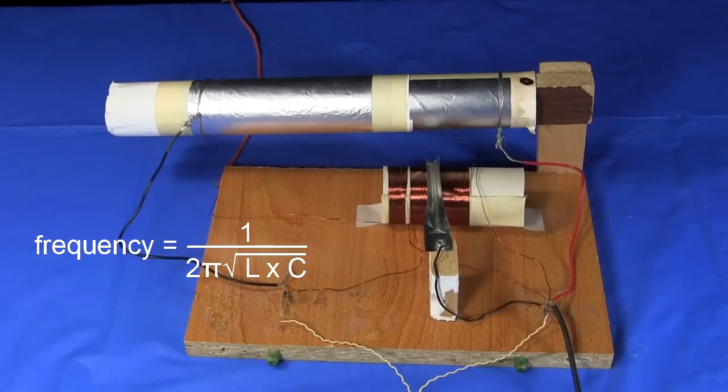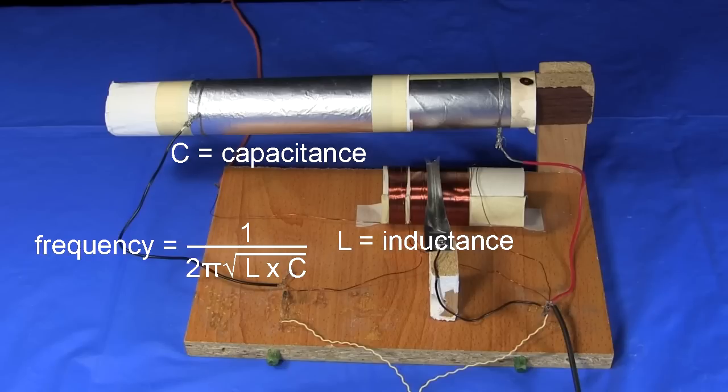The formula for getting that frequency is this. And in the formula you can see there's an L and a C. The L stands for the inductance of the coil, and the C stands for the capacitance of the capacitor.